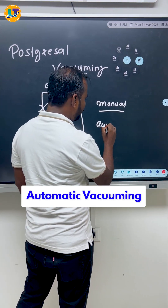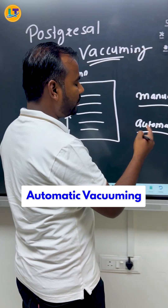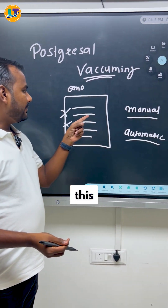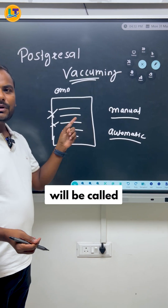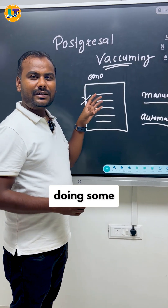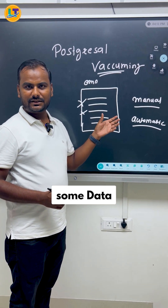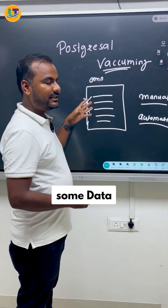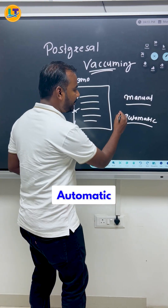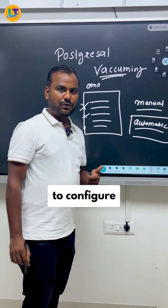We also have a concept called automatic vacuuming. If you configure your automatic vacuuming from the postgresql.conf file, this vacuuming will be called automatically as soon as you are updating your data, inserting some data, or deleting some data from the table. This can be automatic, but for that, there are a lot of parameters available that you need to configure.